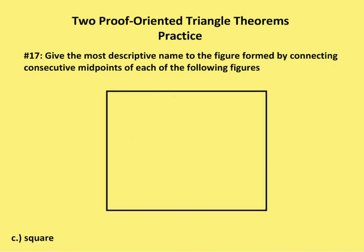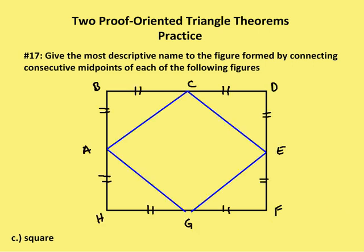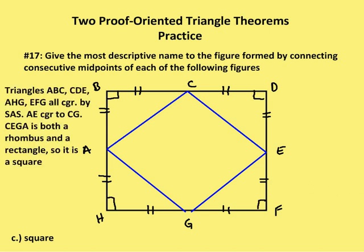Next figure is a square. Give the most descriptive name to the figure formed by connecting midpoints of each of the following figures — in this case, a square. We marked up the midpoints and labeled the diagram. Triangles ABC, CDE, AHG, and EFG are all congruent by side-angle-side, because all interior angles of the square are right angles.